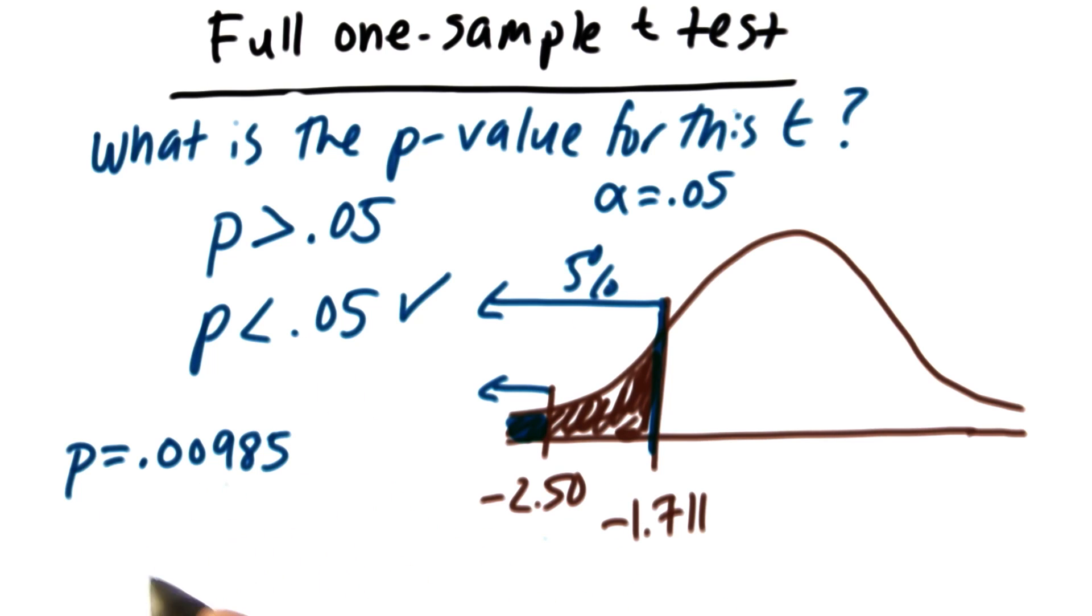We'd probably present this p-value if we were writing this out in a results section as p equals 0.01. That's because we'd round to two decimal places.